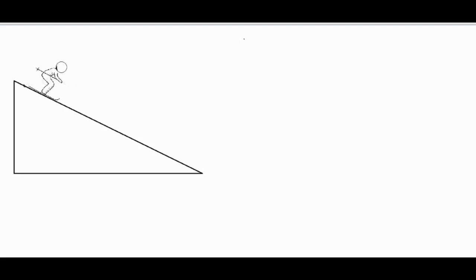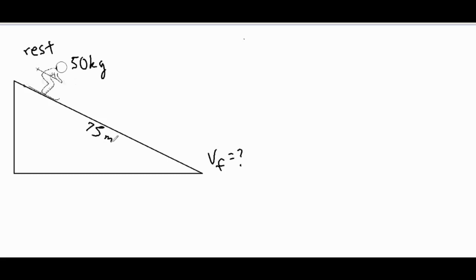In this video we're going to be analyzing a skier going down a hill and solve for the skier's final velocity without friction and with friction. Our skier is going to be 50 kilograms, starts from rest, and we're looking for the final velocity at the bottom of the hill if the hill is 75 meters in length. For the second part, the coefficient of kinetic friction is 0.12.